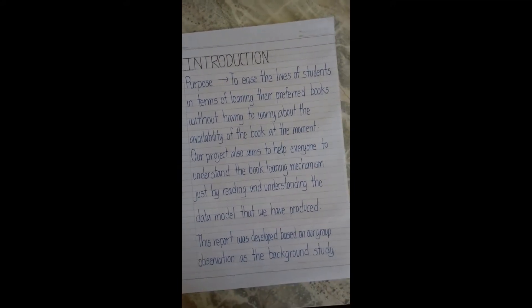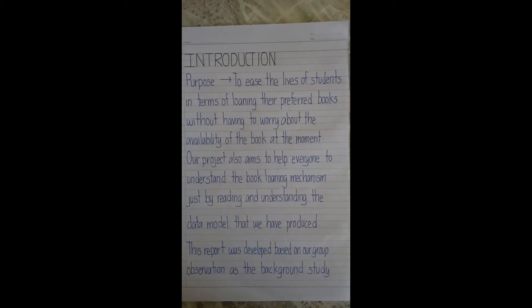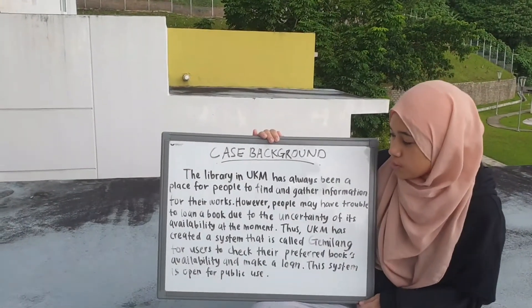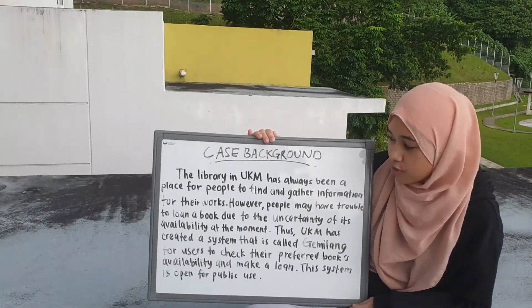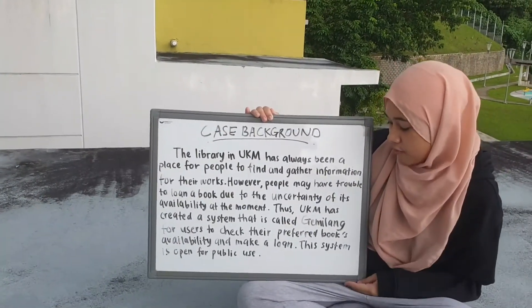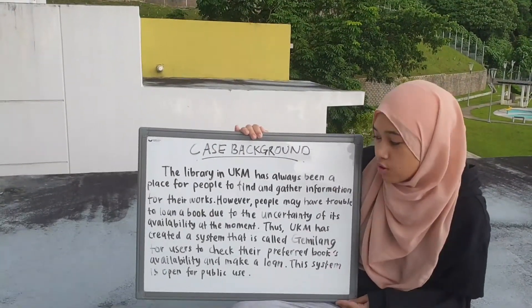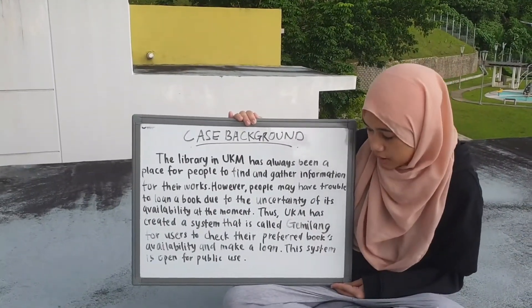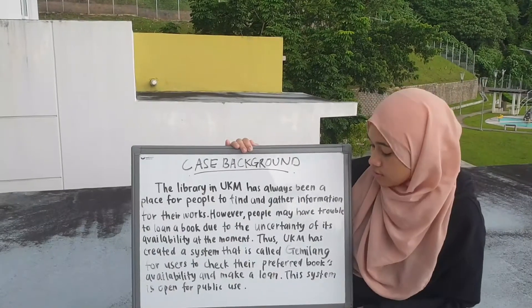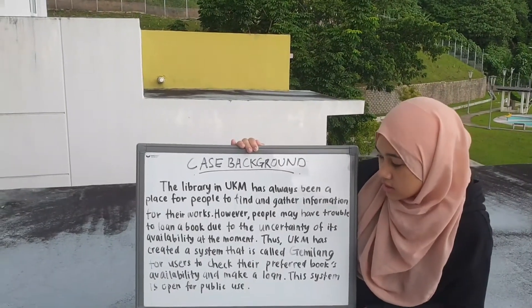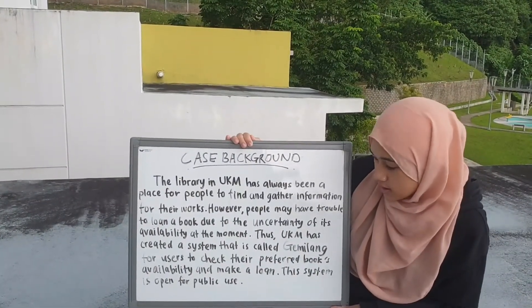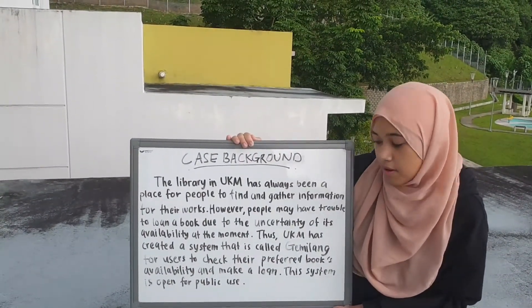This report was developed based on our group observation as the background study. The library in UKM has always been a place for people to find and gather information for their works. However, people may have trouble loaning a book due to the uncertainty of its availability. Thus, UKM has created a system called GAMILAC for users to check their preferred books' availability and make a loan.